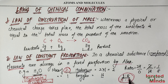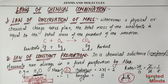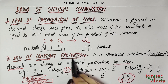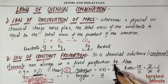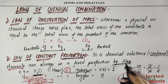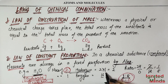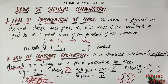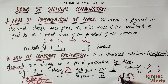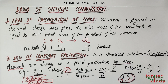This ratio of 1 : 8 is always fixed. I cannot change it. If I increase or reduce their ratio, water will not form. This is the Law of Constant Proportion — proportion means ratio by mass. Whatever ratio comes out, it will always be fixed and never different.